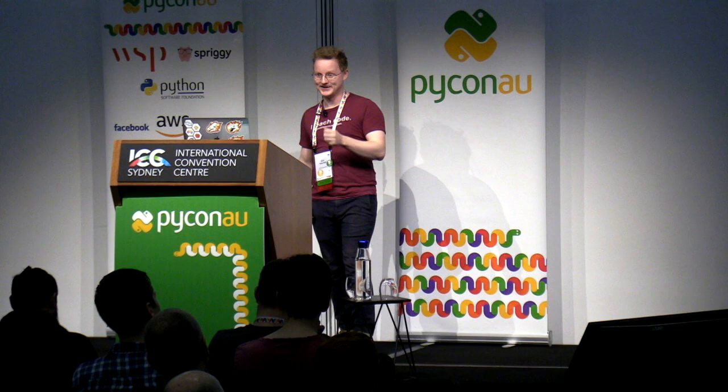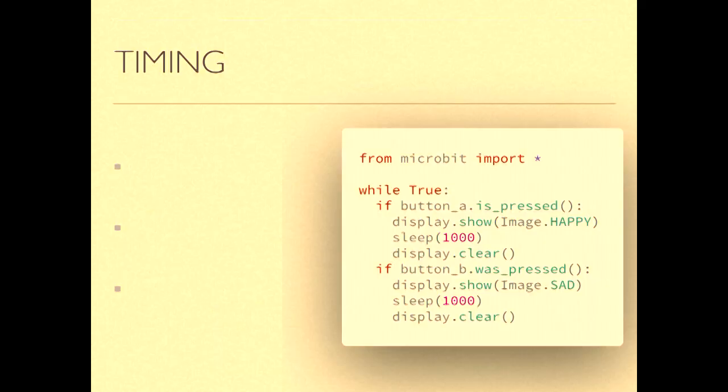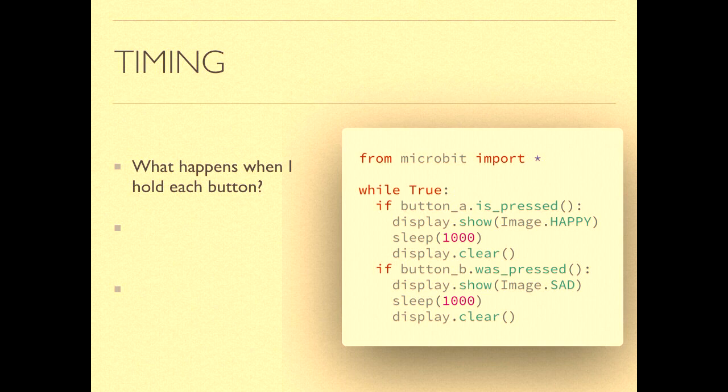wasPressed is more complicated and checks if the button has been held down since the last time the button was checked. Teaching wasPressed can be a multi-class endeavor — it is an extremely complicated topic and is hard to get your head around the first time. Here's a program that checks if button A is pressed and shows a happy face, but also checks if button B was pressed and shows a sad face.